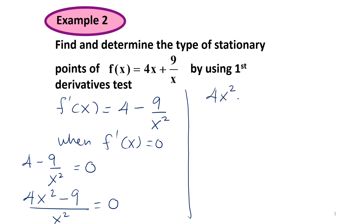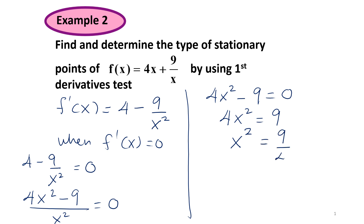So 4x squared minus 9 is equal to 0, which gives 4x squared equal to 9. Therefore x squared is equal to 9 over 4, so x is equal to positive or negative 3 over 2, that is x equals positive 1.5 or negative 1.5.